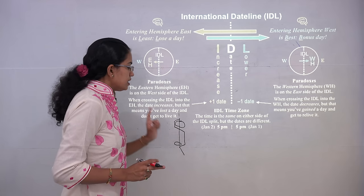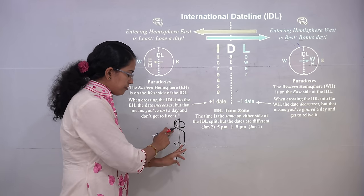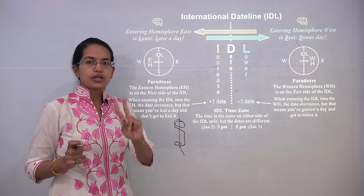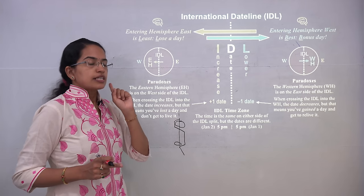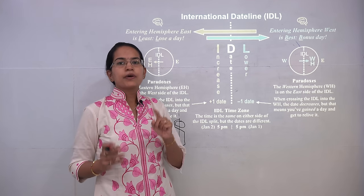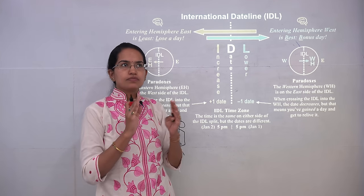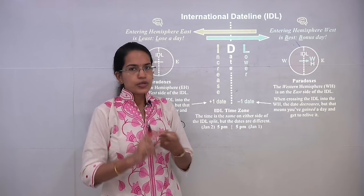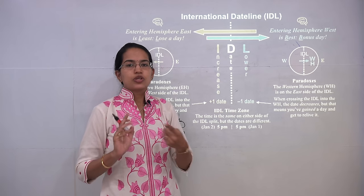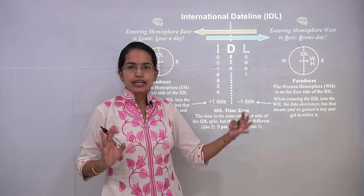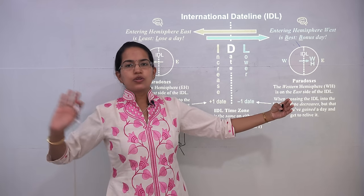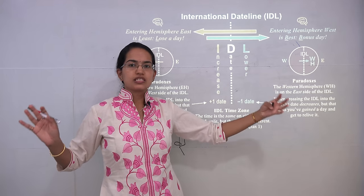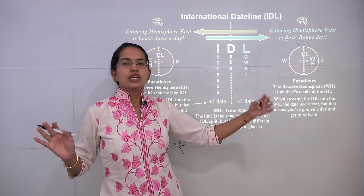The country with the highest number of time zones is the former USSR, which has 11 time zones from Leningrad to Vladivostok. Traveling across this distance, you would need to adjust your watch multiple times.